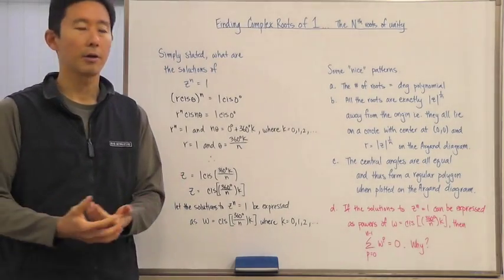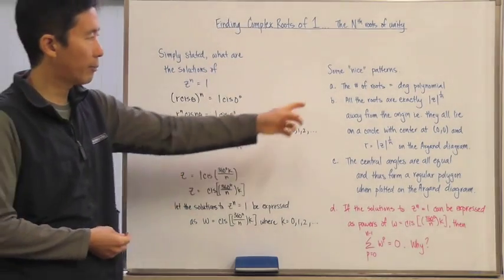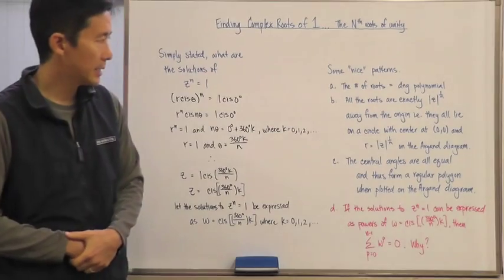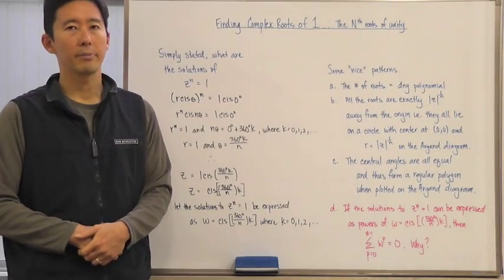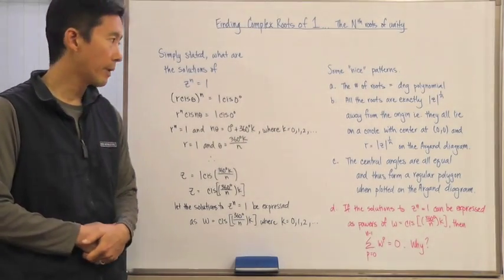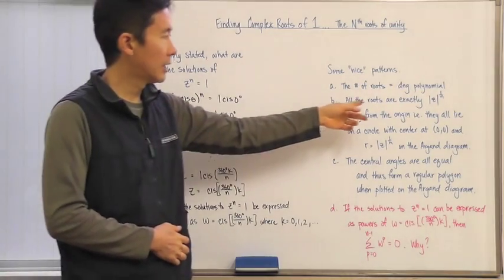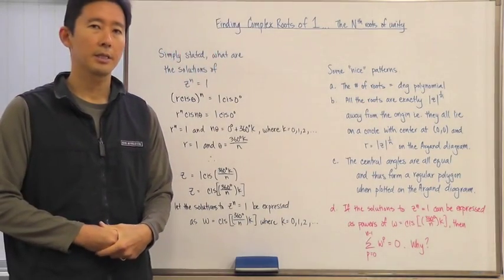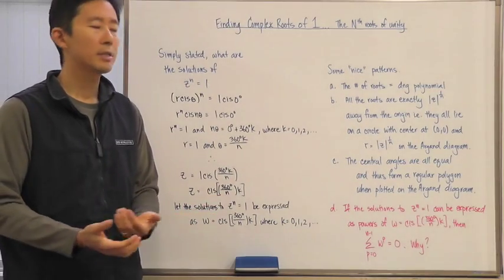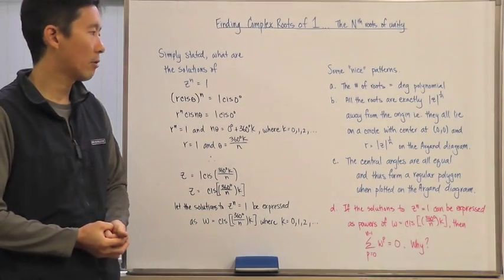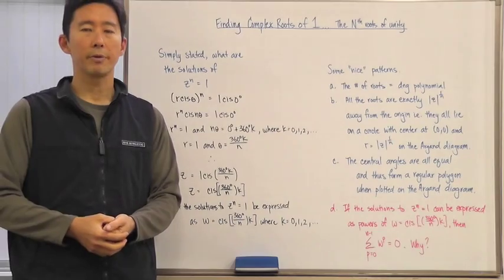I'm hoping that everybody realizes that the number of roots is going to be equal to the degree of the polynomial that we have. Also, all the roots are exactly the modulus of z raised to the 1 over n power away from the origin.